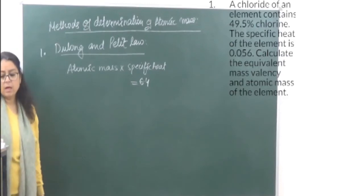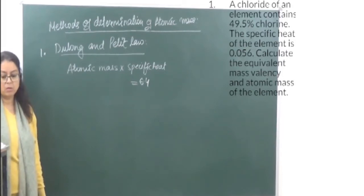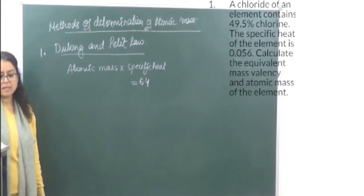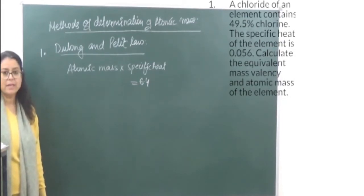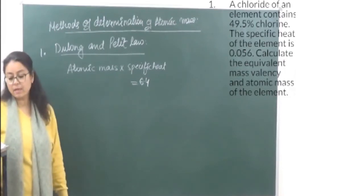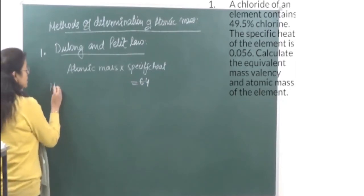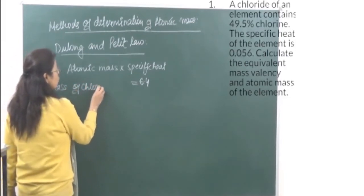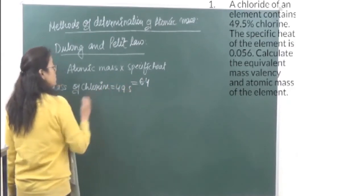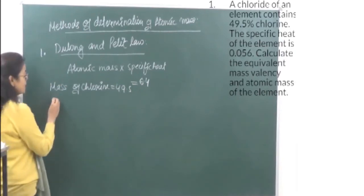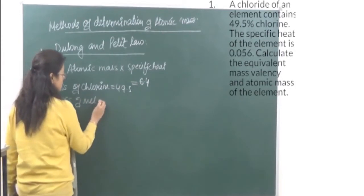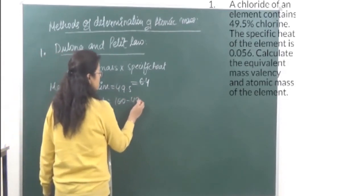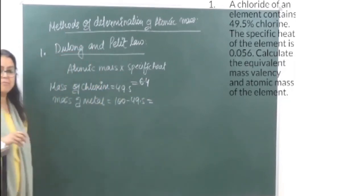The first method of determining atomic mass is known as Dulong and Petit's Law. According to this law: atomic mass × specific heat = 6.4. So if specific heat is given in the question, you can easily calculate the atomic mass. Question: A chloride of an element contains 49.5% of chlorine, and the specific heat of the element is 0.056. Calculate the equivalent mass, valency, and atomic mass.